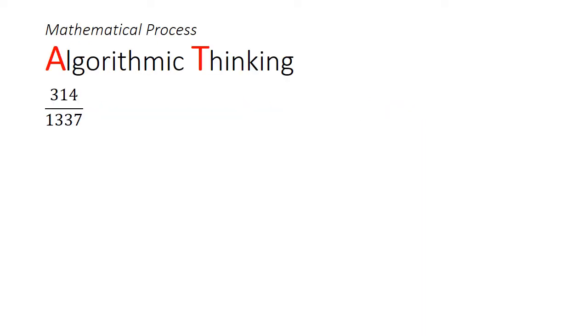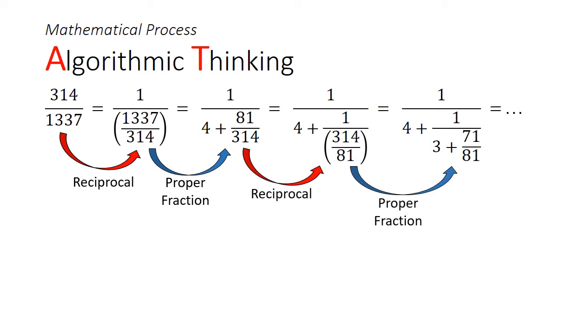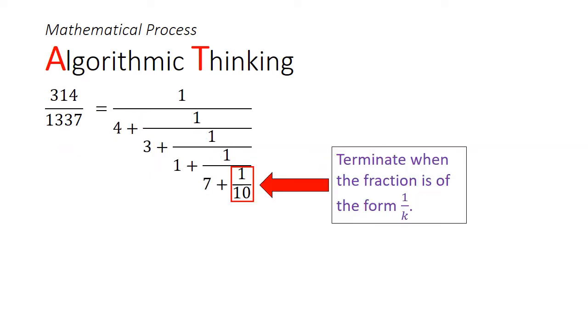This is a prime example of algorithmic thinking. If we start with a fraction less than 1, we need to invert the fraction by taking its reciprocal. Then we need to convert this into a proper fraction, and we keep repeating this process over and over. This continues until you get a fraction in the form of 1 over K.